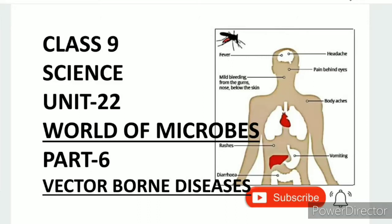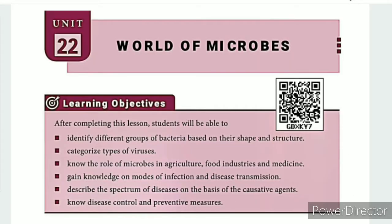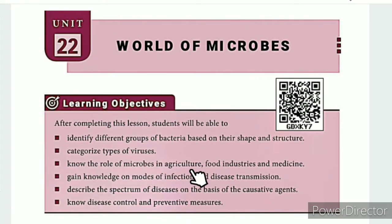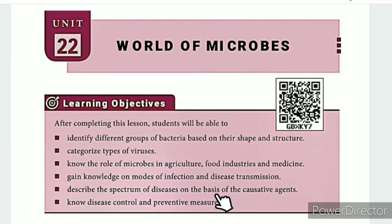Greetings from SS Class 9 Science Unit 22, World of Microbes Part 6: Vector-Borne Diseases. The learning objectives are: identify different groups of bacteria based on their shape and structure; categorize types of viruses; know the role of microbes in agriculture, food industries, and medicine; get knowledge on modes of infection and disease transmission; describe the spectrum of diseases on the basis of causative agents; know the disease control and preventive measures.